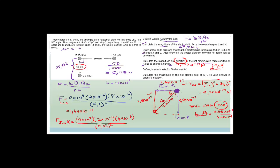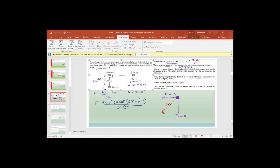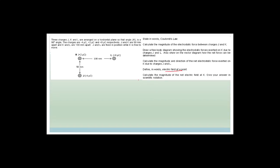The next part of the question says: define the term 'electric field at a point.' You need to check your exam guidelines for the exact definition. Basically, you could say it is a region around a charged particle within which a force would be exerted on another charged particle. Another way: the electric field at a point is defined as the electric force per unit charge.